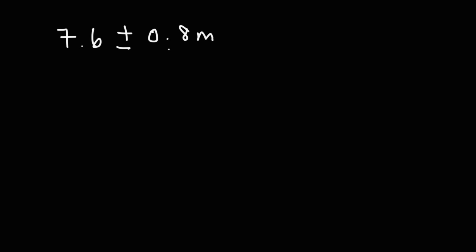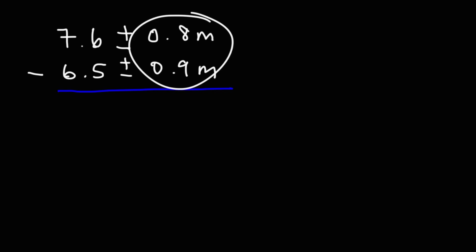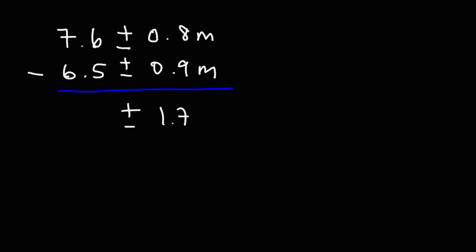Now let's try an interesting example. We have 7.6 plus or minus 0.8 meters, and we subtract 6.5 plus or minus 0.9 meters. First, add the uncertainties: 0.8 plus 0.9 is 1.7. Then 7.6 minus 6.5: 6 minus 5 is 1, 7 minus 6 is 1, so we get 1.1 plus or minus 1.7 meters.